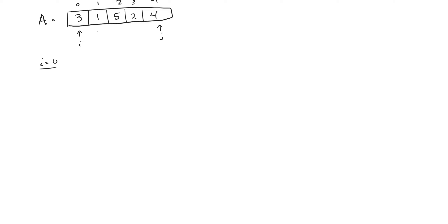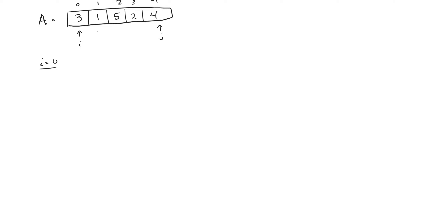Wherever J is, we're going to compare A[J] with A[J-1], the index right before it. If A[J] is less than A[J-1], then we're going to swap them. If we want to sort in ascending order and A[J] is less than A[J-1], those two numbers are out of order. But in this case, two and four — four is actually greater than two and they're in ascending order, so we don't have to do anything; there's no swapping. When J equals four, the array is going to stay the same.